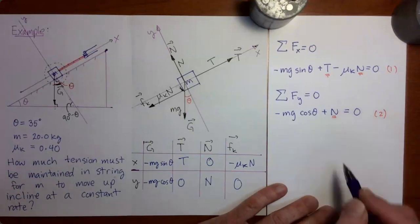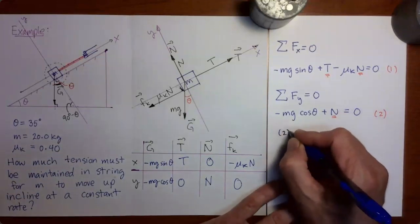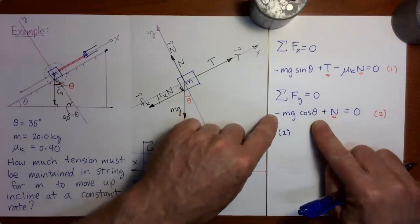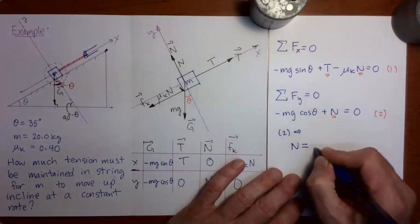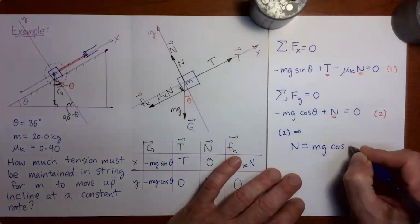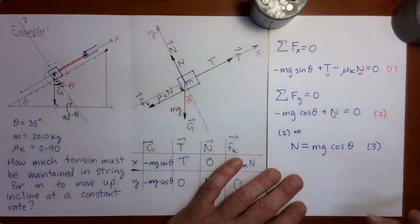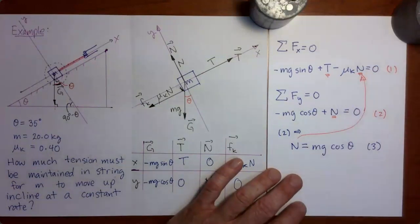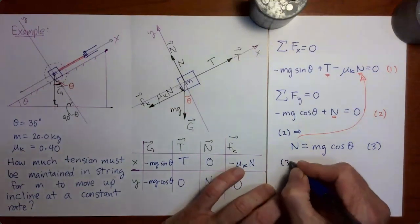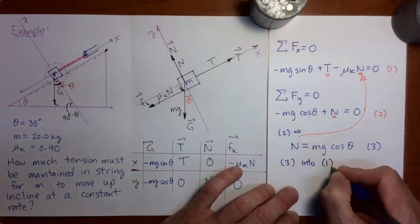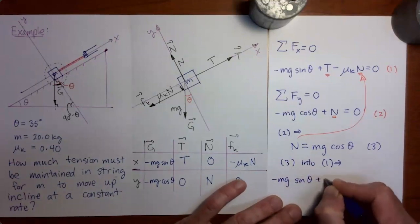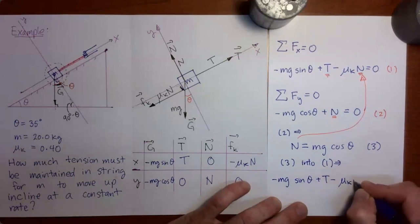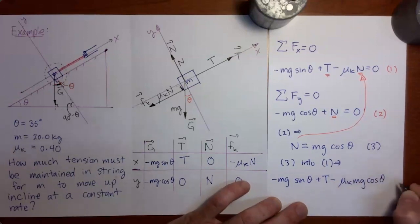We'll start by solving equation two for the normal force: taking −mg cos θ to the right gives N = mg cos θ — call that equation three. Now substitute equation three into equation one: −mg sin θ + T − μₖ(mg cos θ) = 0.